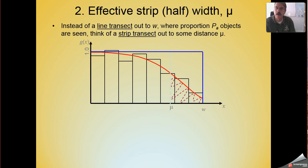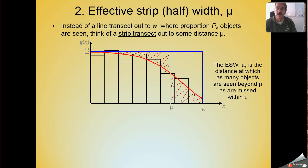How is that possible? Well, the idea is that we're going to see some animals at distances beyond mu, and those are the ones that have been highlighted here by this dotted red line. Watch this animation closely. What we're doing is we're transforming those animals seen beyond mu to compensate for animals that we missed at distances less than mu.